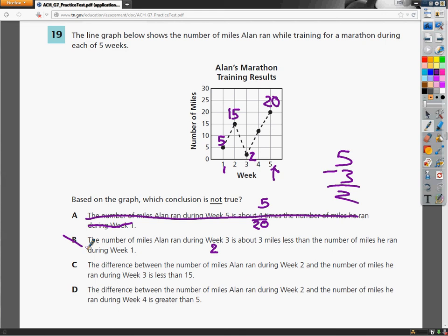C says the difference between the number of miles that Alan ran during week 2 and the number he ran during week 3 is less than 15. Well, in week 2, he ran 15. In week 3, he ran 2. So they say the difference. Now the difference doesn't mean that they look different or some other weirdness. Difference is a math word for subtract. So if I do 15 minus 2, I get 13, and that is certainly less than the 15 that they predict, so C is probably out as well.